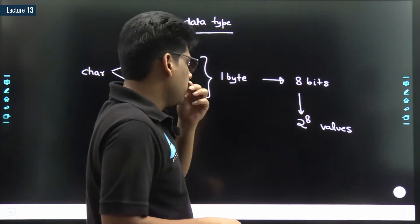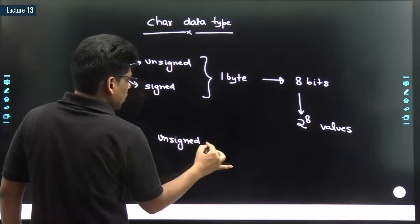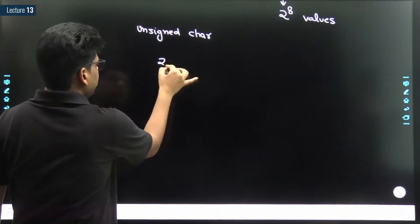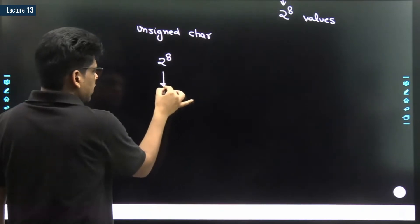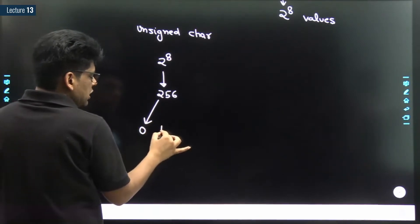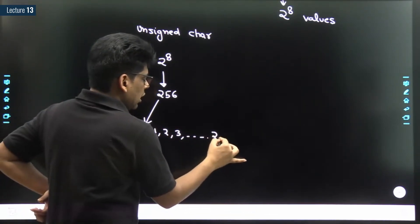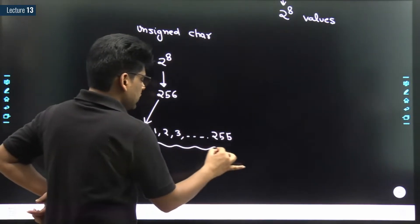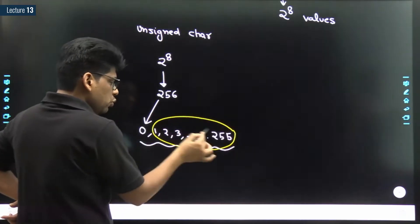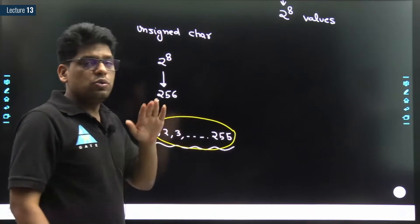We can generate 2 to the power 8 possible combinations. If I talk about unsigned char, we have 2 to the power 8 values, which is 256. In case of unsigned char, if counting starts from zero, it will go from 0, 1, 2, 3, up to 255. The count of these numbers is 256 - there are 255 values plus zero, that is why the count is 256.